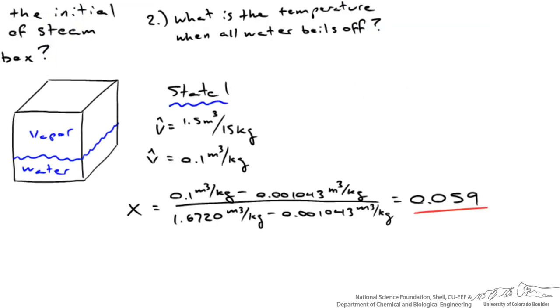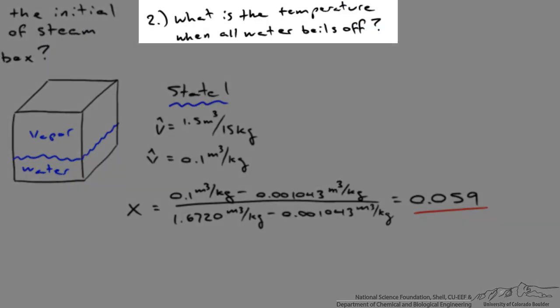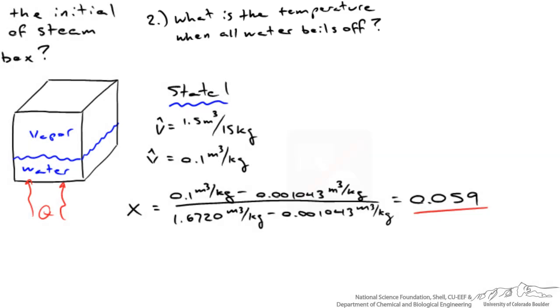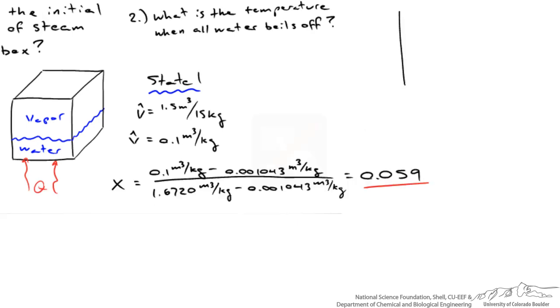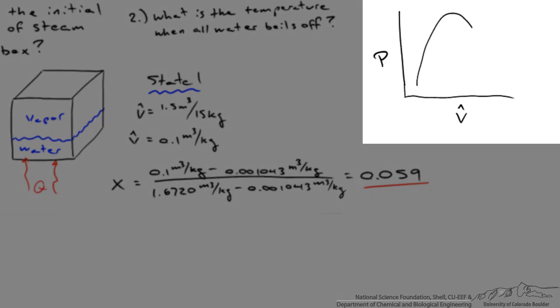The second problem is asking what is the temperature if we add heat to this system? What is the temperature when all of the water boils off? The first thing I do is draw a PV diagram. I've got pressure on the y axis and specific volume on the x axis. Then I draw this two-phase envelope. You've got subcooled liquid here, a two-phase region, and superheated vapor. And you know the specific volume is about 0.1 cubic meters per kilogram.